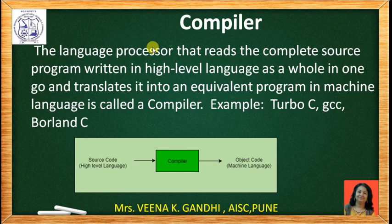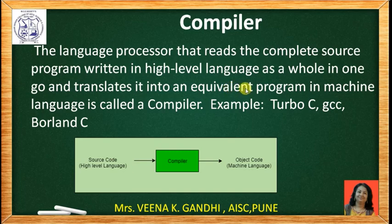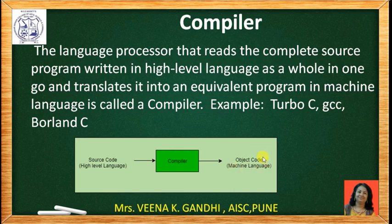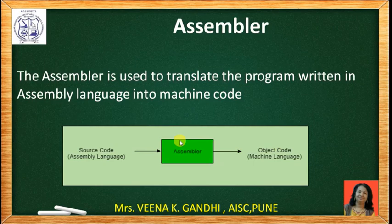Now the next topic is language translators. A language translator accepts one programming language and converts it into another programming language. First we will see the compiler. The compiler is a language processor that reads the complete source program written in high-level language as a whole in one pass and translates it into an equivalent machine-level program called object code. Examples of compilers are Turbo C, GCC, Borland C — compilers used by C, C++, Java, etc. As you can see in the figure, the compiler accepts the high-level language code and translates it into machine-level code or object code. The assembler is used to translate the program written in assembly language and convert it into machine code. The assembler accepts assembly language as source code and translates it into machine-level code.